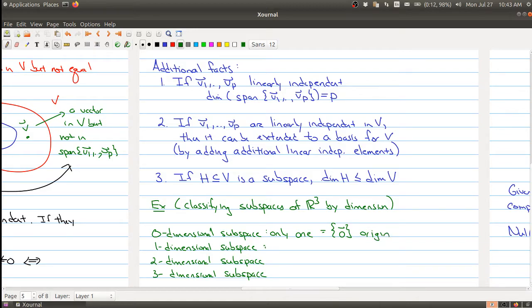A one dimensional subspace, well there's an infinite number of these and these would be any line through the origin. Two dimensional spaces, well there's also going to be an infinite number of these and this would be any plane through the origin. So that gives me another infinite family of two dimensional subspaces.